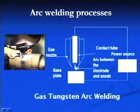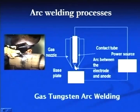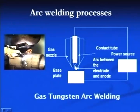The molten weld pool is allowed to solidify freely in this welding process to produce a sound joint. In the figure, we can see that a thin pipe is being joined with the TIG process. This process is a very low heat input process, provides high energy density, and that is why it helps to join thin sheets and produce high quality weld joints.